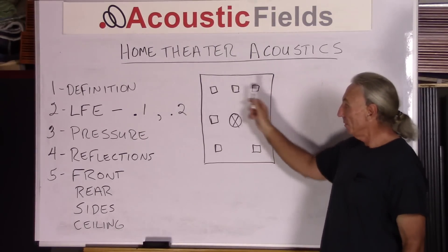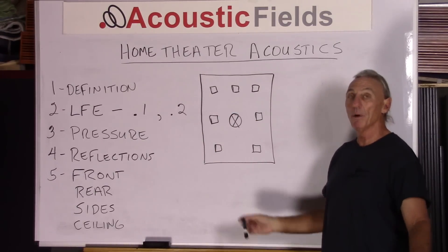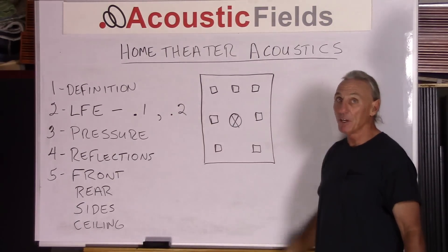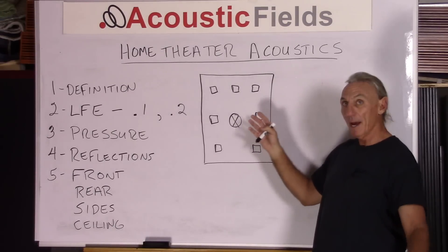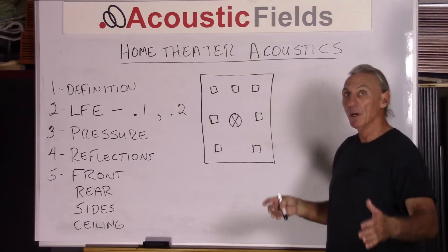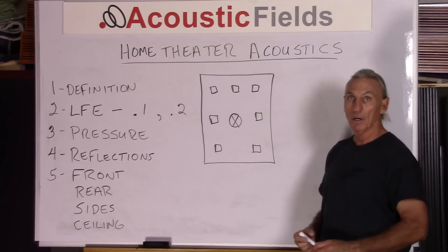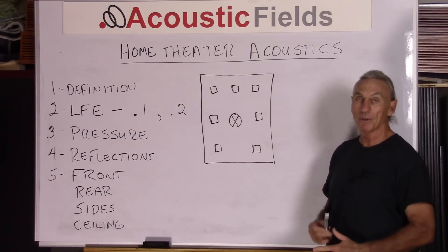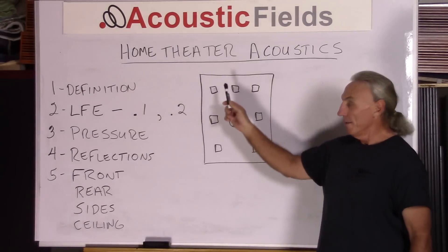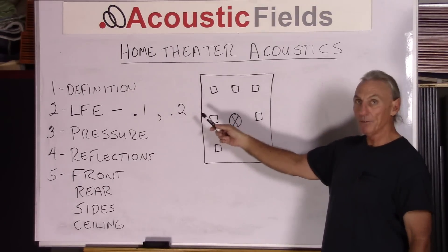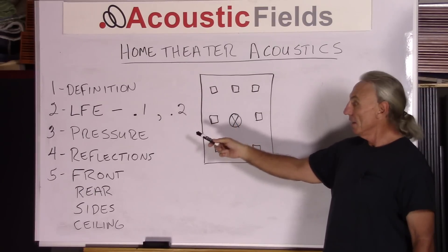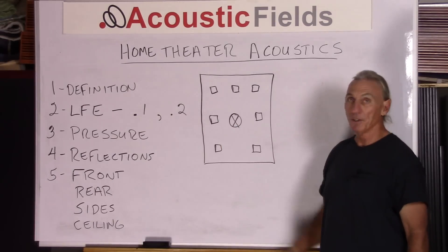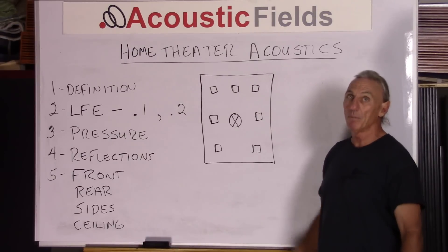We have all these multiple mono sources plus we have the low frequency effect channel — the subwoofer channel. We can have one subwoofer, two, four, or even six. So we have extra channels devoted to producing low frequency energy, and obviously this is for the explosions, crashes, and things like that so prevalent in home theater. The bottom line is we have all these sources, all these low frequency generating sources, creating lots of low frequency pressure in the room — common sense tells us we're going to have more sound pressure to deal with.